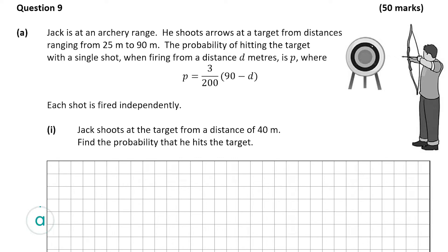Part A tells us that Jack is at an archery range. He shoots arrows at a target from distances ranging from 25 to 90 meters. The probability of hitting the target with a single shot when firing from a distance d meters is p, where p = 3/200 × (90 − d). Each shot is fired independently, meaning one shot has no impact on the likelihood of the next shot hitting or missing.